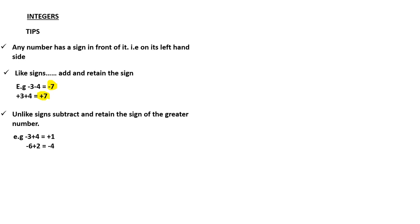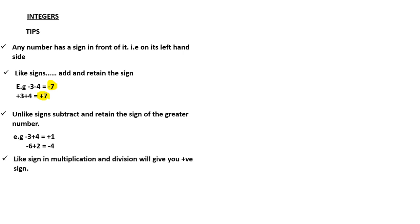For the second example: negative six plus two — the two numbers have different signs. We subtract: six minus two is four. Six is greater than two, and since six has a negative sign, the answer is negative four.